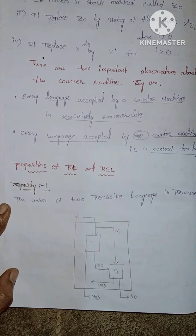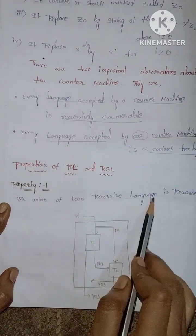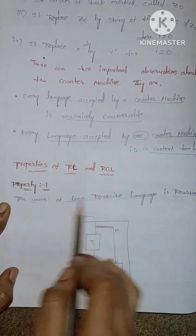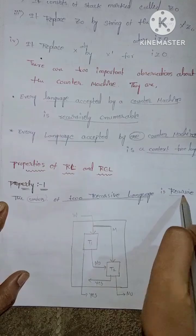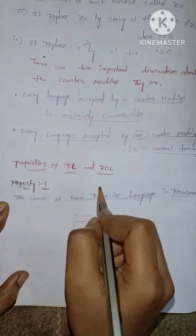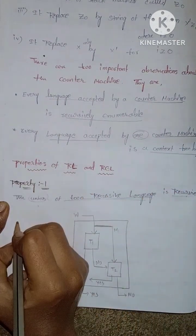The next topic is properties of recursive language and recursive enumerable language. Property one: the union of two recursive languages is recursive. Okay, now recursive language, the union of two, is recursive.